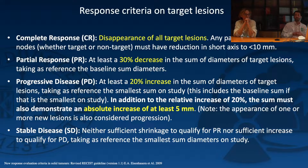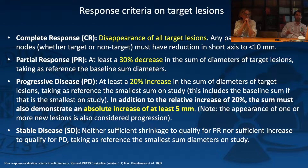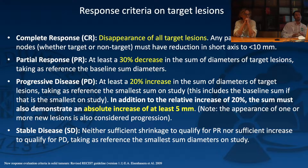Complete response requires the total disappearance of all target lesions. Partial response is a decrease of at least 30% in the sum of the longest diameters. Progressive disease is an increase of at least 20% in the sum of the diameters plus an absolute increase of at least 5 mm. Stable disease is neither partial response nor progressive disease — the measurements fall between those thresholds.